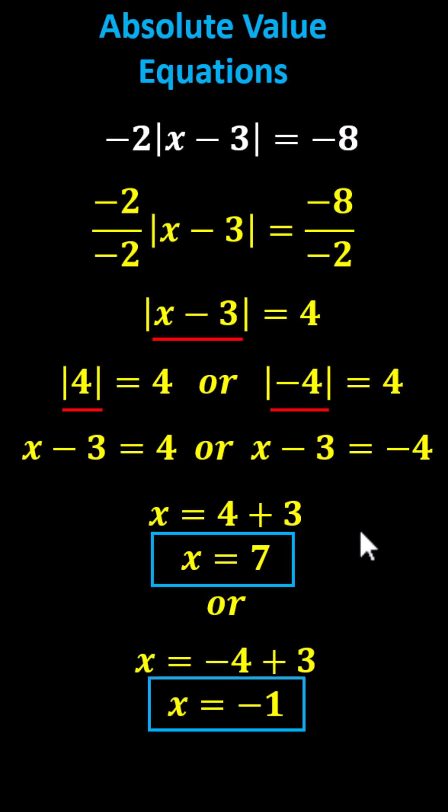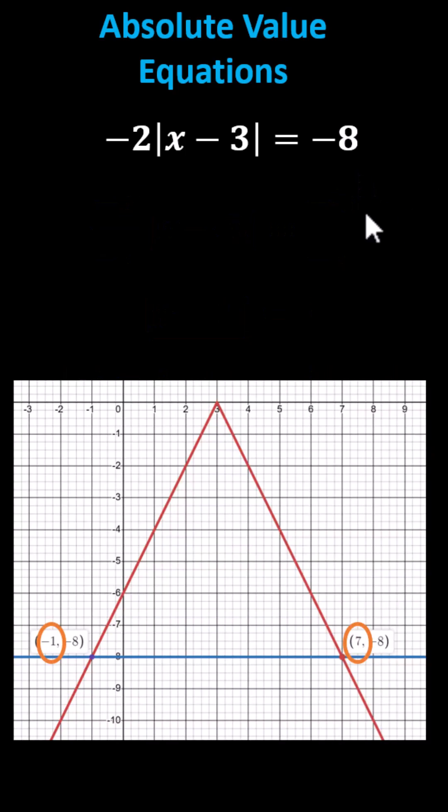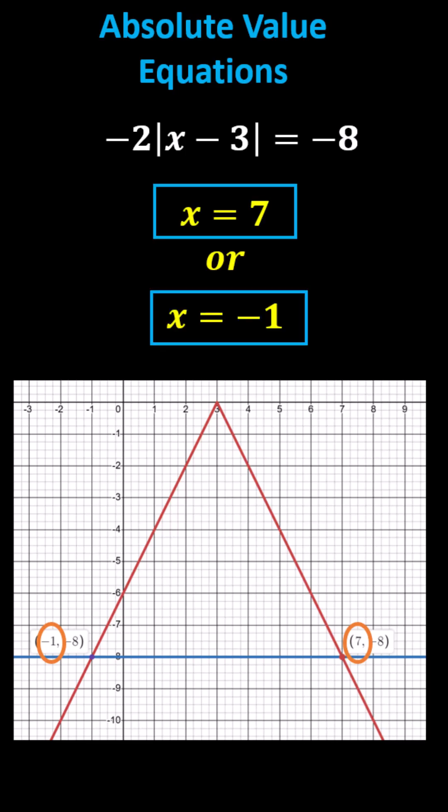We can verify these results by graphing y equals the left side of the equation and y equals the right side of the equation on the coordinate plane and looking for the x-coordinates of the points of intersection. Here's the resulting graph. Notice on the left we have x equals negative 1, on the right we have x equals 7, again verifying we have two solutions.